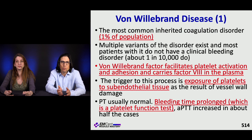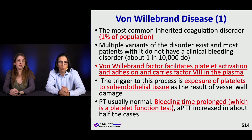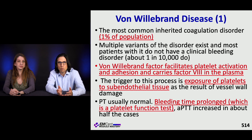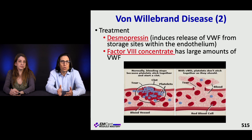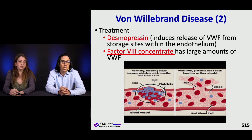Von Willebrand disease is actually the most common inherited coagulation disorder, affecting about 1% of the population. There are many variants, and most patients don't have a clinical bleeding disorder — only about 1 in 10,000 do. Von Willebrand factor facilitates platelet activation and carries factor VIII in the plasma; the trigger is exposure of platelets to subendothelial tissue after vessel wall damage. The PT is usually normal, but bleeding time is prolonged since it's a platelet function test, and aPTT is elevated in about half of cases. Treatment is desmopressin to release von Willebrand factor from the endothelium, or factor VIII concentrate, which contains large amounts of von Willebrand factor.